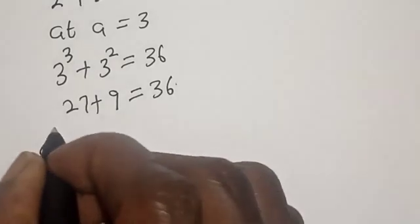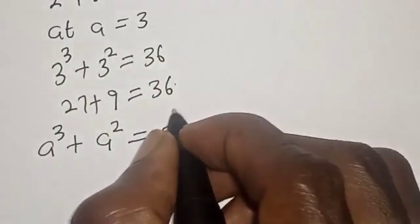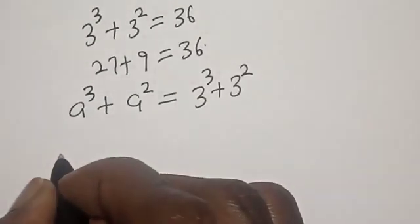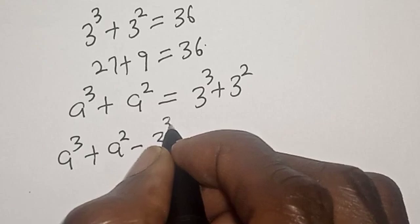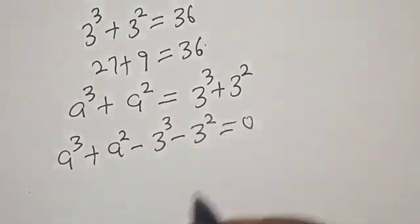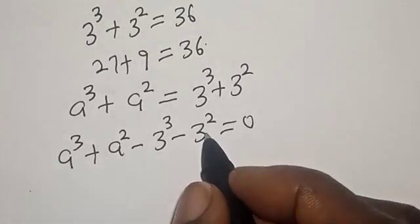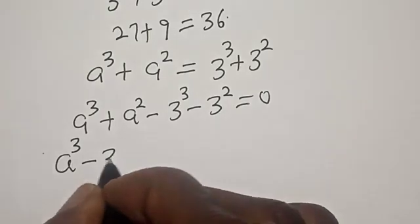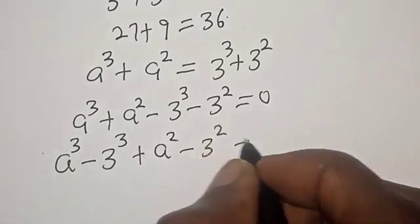Now A raised to power 3 plus A squared is equal to 36 can be rewritten by substituting the known root. We get A raised to power 3 plus A squared minus 3 raised to power 3 minus 3 squared is equal to 0.